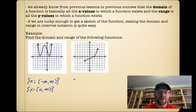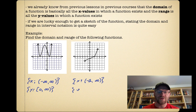For our second function, looking at the domain, we can see that the graph starts on the left but it doesn't actually start at a value of negative two, so we would use an open bracket for that. This arrow indicates it goes all the way to the positive side, so the domain is from negative two to infinity. For the range, the y values similarly don't exist at negative two but exist very close to negative two, and it continues upward, so that would be negative two all the way up to positive infinity.